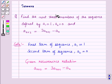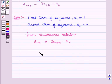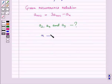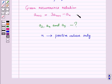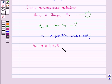Now we have to find the next three numbers of the sequence, that means we have to find a3, a4, and a5. Now n can take positive values only. Let us name this relation as equation 1. Since n can take positive values only, let us put n equal to 1, 2, and 3 to obtain the required terms.